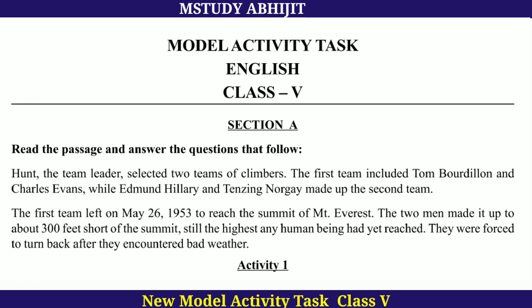Section 1: Read the passage and answer the questions that follow. Hunt, the team leader, selected two teams of climbers. The first team included Tom Bardillon and Charles Evans, while Edmund Hillary and Tenzing Norgay made up the second team. The first team left on May 26, 1953 to reach the summit of Mount Everest. The two men made it up to about 300 feet short of the summit — still the highest any human being had yet reached — but were forced to turn back after they encountered bad weather.